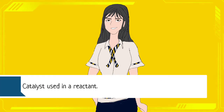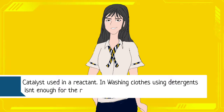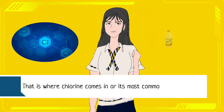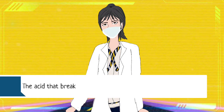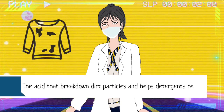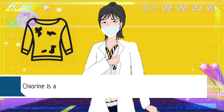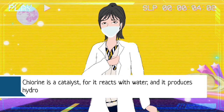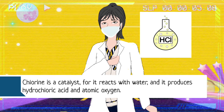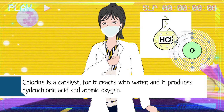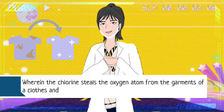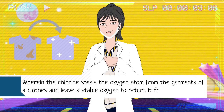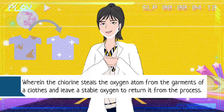Number two: catalysts. Using detergent alone when washing clothes isn't enough for the removal of odor and stains. That is where chlorine comes in, or the most common brand, Zonrox. The acid breaks down dirt particles and helps detergent remove stains and odor. Chlorine is a catalyst — it reacts with water and produces hypochlorous acid and atomic oxygen, wherein the chlorine removes the oxygen atom from the garments of clothes.